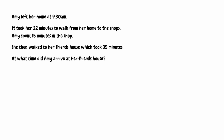Amy leaves her house at 9:30am. It then takes her 22 minutes to walk from her home to the shops, so we're simply going to add on 22 minutes. We're still going to have 9 in the hour column, and adding those 22 minutes onto 30 gives us 52. So we're currently at 9:52am.